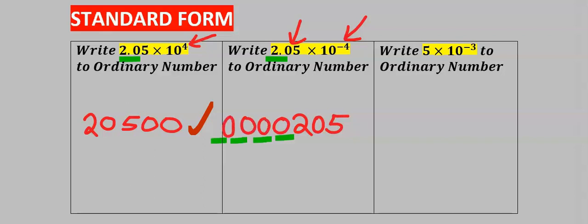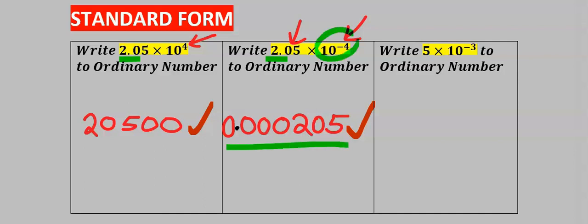Next, we're going to put a decimal in front of the last digit, and this is our answer — which is a small number because of this minus four.